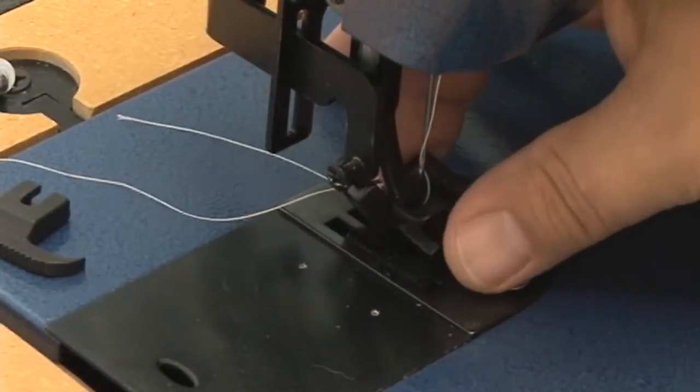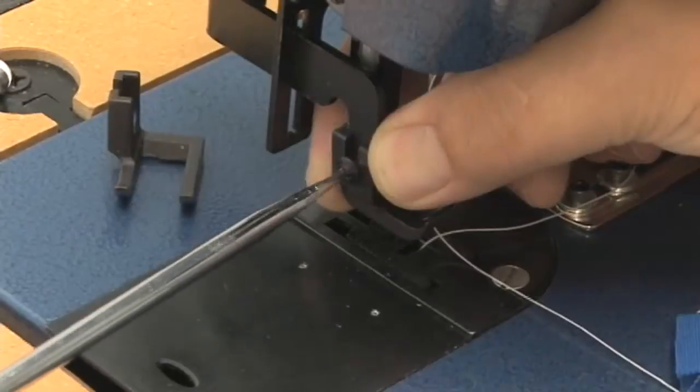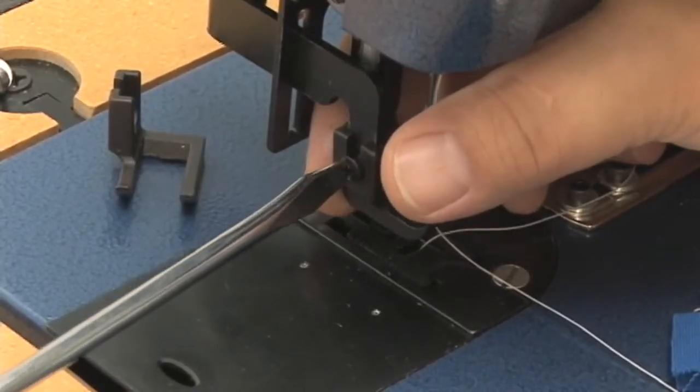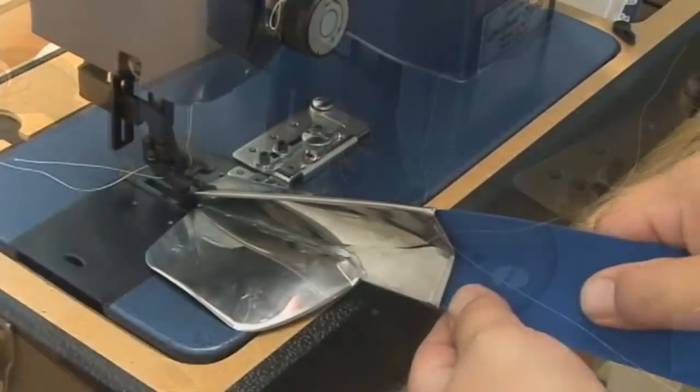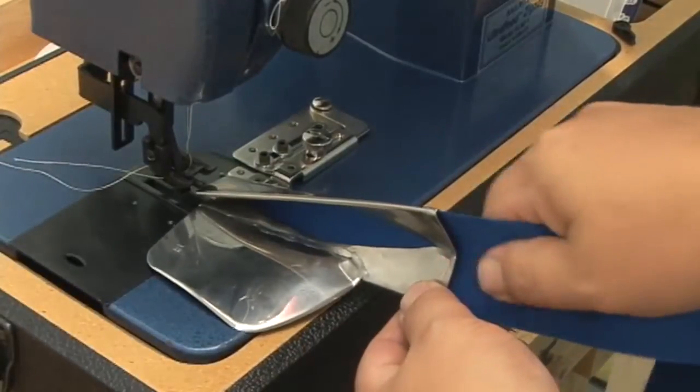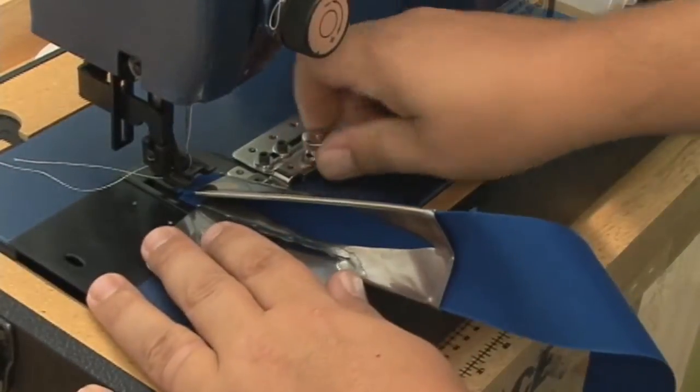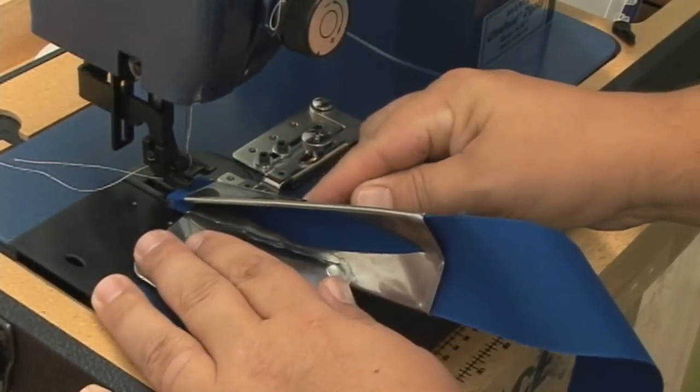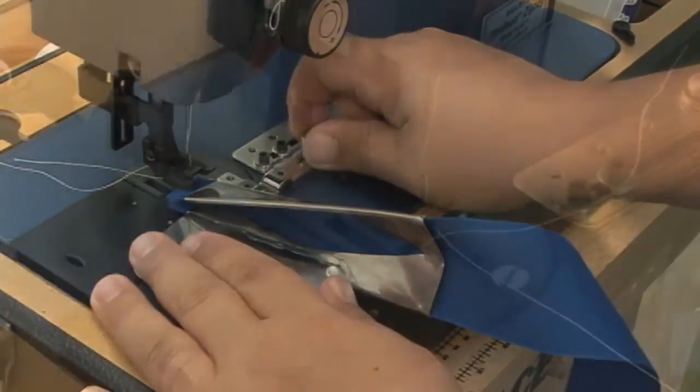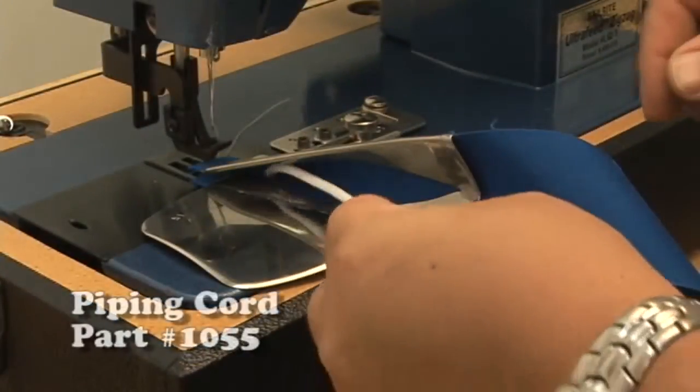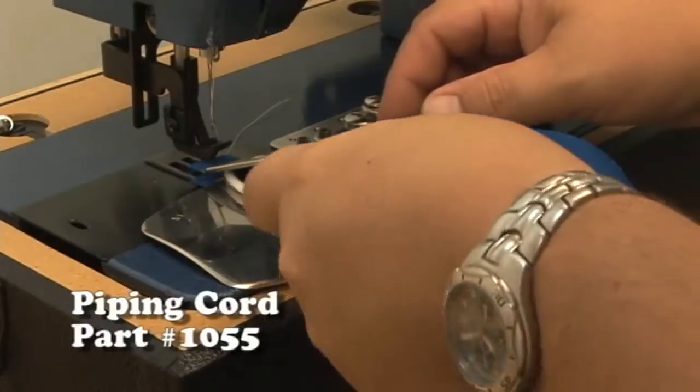We'll take off that regular foot and put a roping zipper foot left in. This gets that needle right up against the raw edge of our cording. We'll insert that 2 inch Sunbrella tape that we made. You can make any kind of fabric but we're using Sunbrella and then position the binder and feed the piping cord right in the center of the binder.